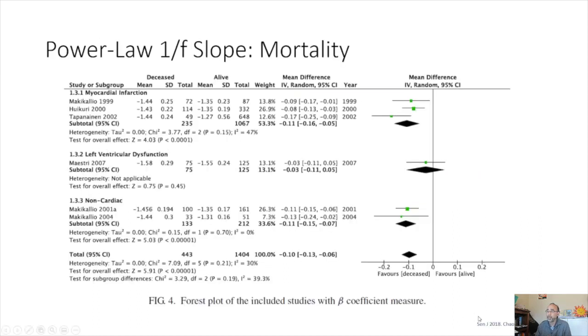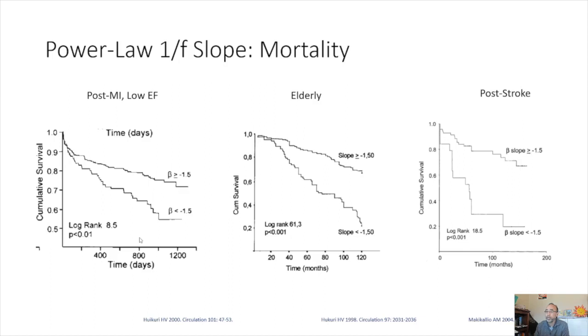So this is a forest plot obtained from Senn et al. in 2018, which summarizes the application of power law 1 over f slope to multiple conditions, MI, left ventricular dysfunction, non-cardiac conditions. And we see here generally that the individuals who died had a higher slope or more of a negative slope compared to those who remained alive. And this relationship was significant if you combined all the factors all together. And these are figures that were obtained from some of the studies that were listed in the meta-analysis. And you can see here again a steeper slope indicating a slope less than minus 1.5 indicates higher rates of mortality. And this occurred in post-myocardial infarction, low ejection fraction groups, elderly individuals without past medical history of cardiovascular disease, and even post-stroke.